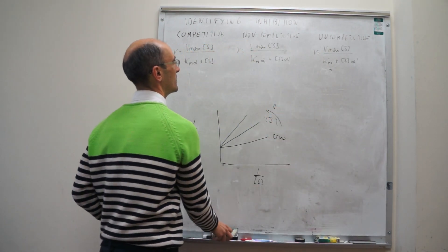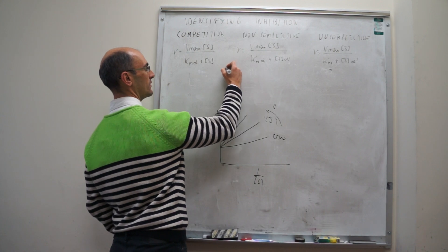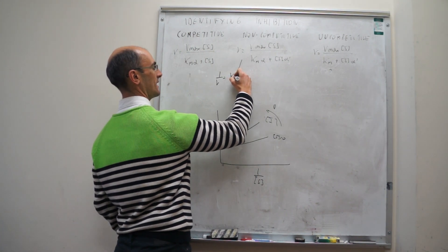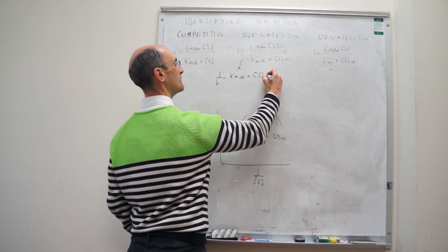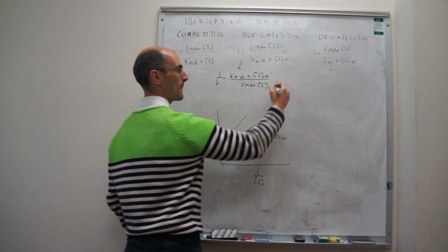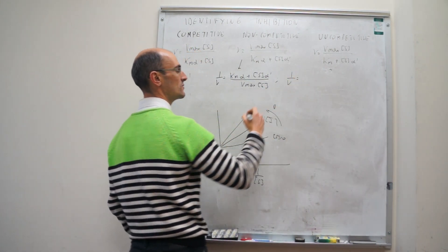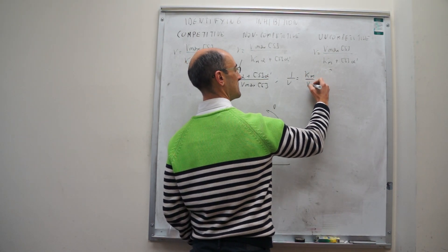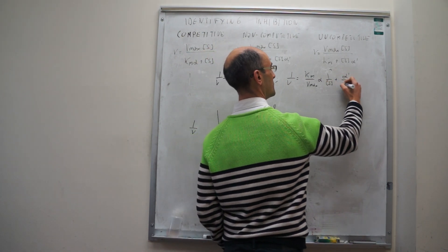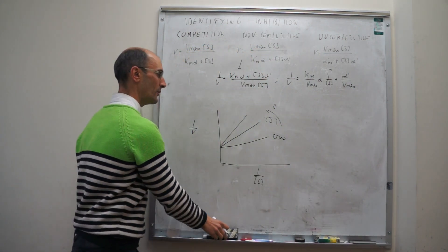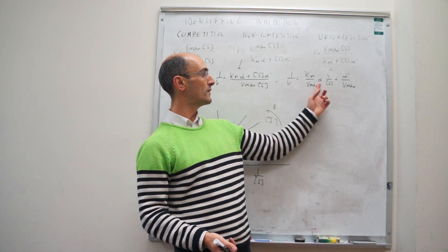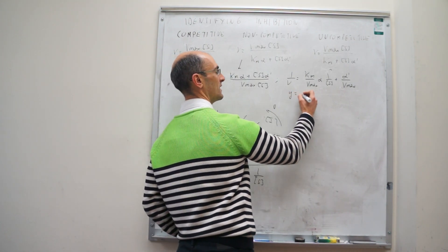For non-competitive inhibition, the Lineweaver-Burk representation gives: 1/V = (K_M alpha / Vmax) × (1/S) + alpha prime / Vmax. Comparing this to the uninhibited equation, both the slope and the intercept are modified. The slope is affected by alpha and the intercept is affected by alpha prime, and both of them increase. That makes it different from competitive inhibition.